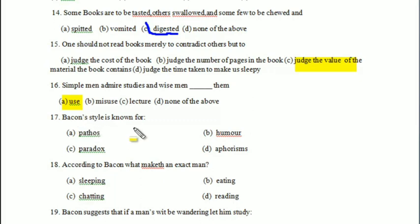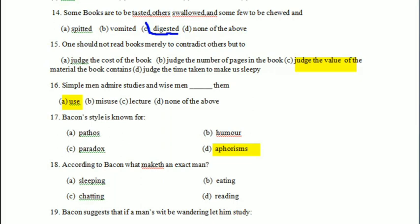Bacon's style is known for — pathos, humor, paradox, or aphorism? It is aphoristic. Aphorism means witty sentences. According to Bacon, what maketh an exact man — sleeping, eating, chanting, chatting, or reading?